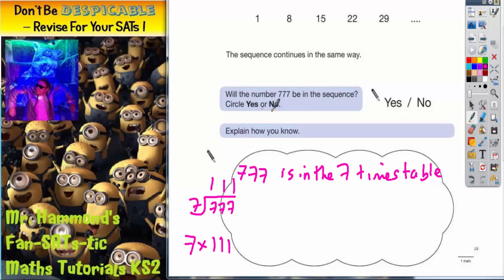So will the number 777 be in the sequence? The answer is no. And it's because 777 is in the 7 times table. But the sequence, this sequence up here, is not the 7 times table.